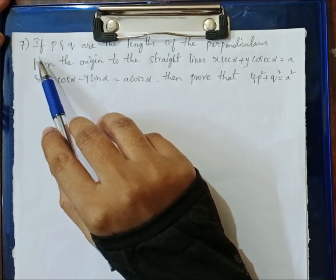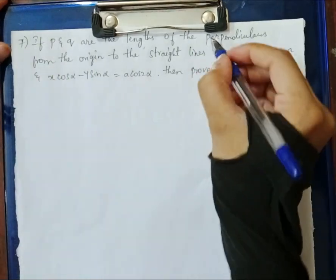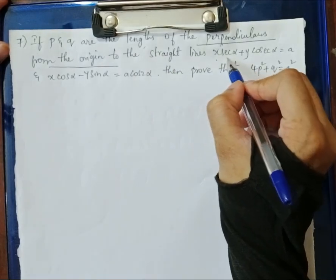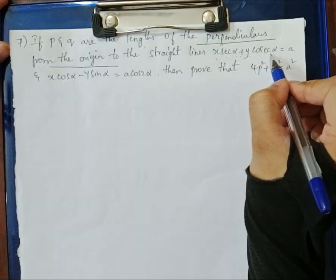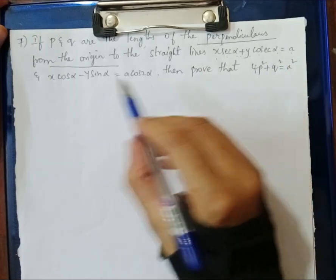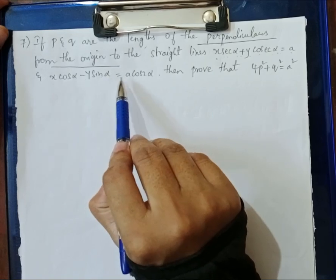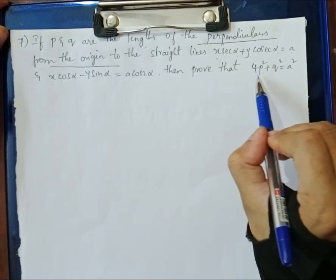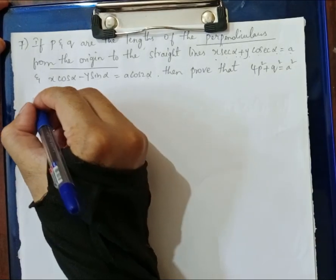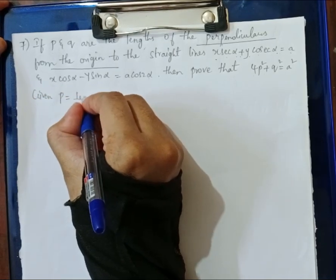The question is: if p and q are the lengths of the perpendiculars from the origin to the line x·sec(α) + y·cosec(α) = a, and the line x·cos(α) − y·sin(α) = a·cos(2α), then we should prove that 4p² + q² = a².